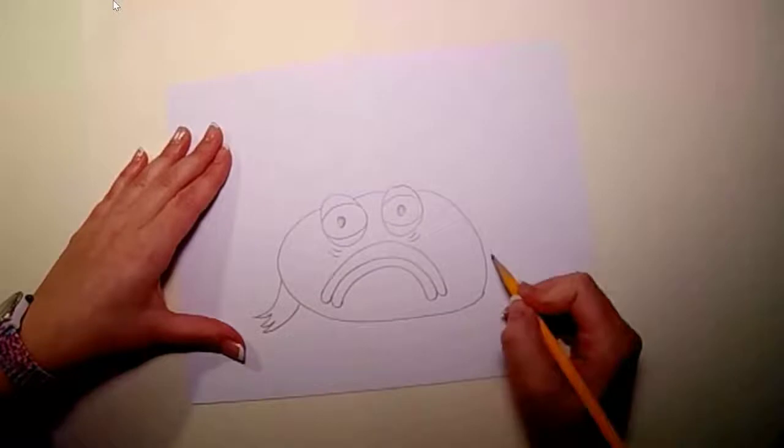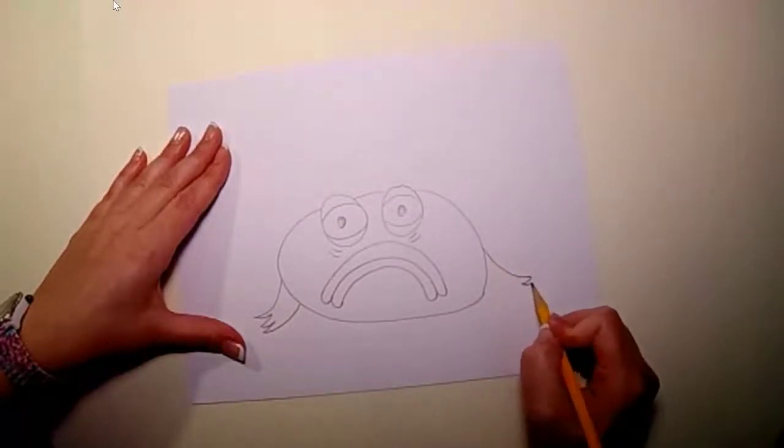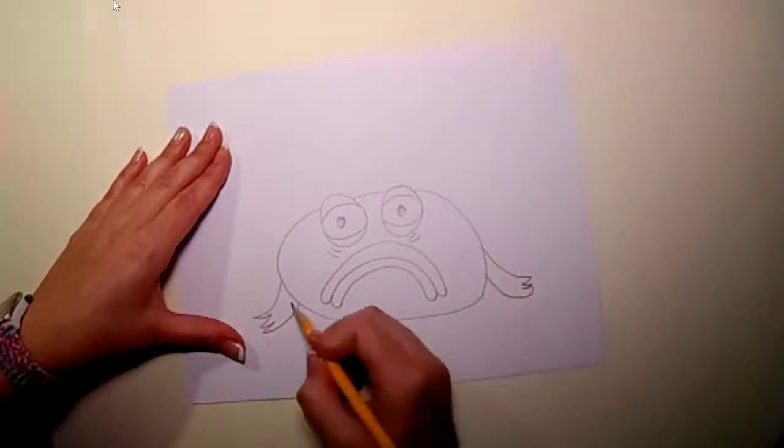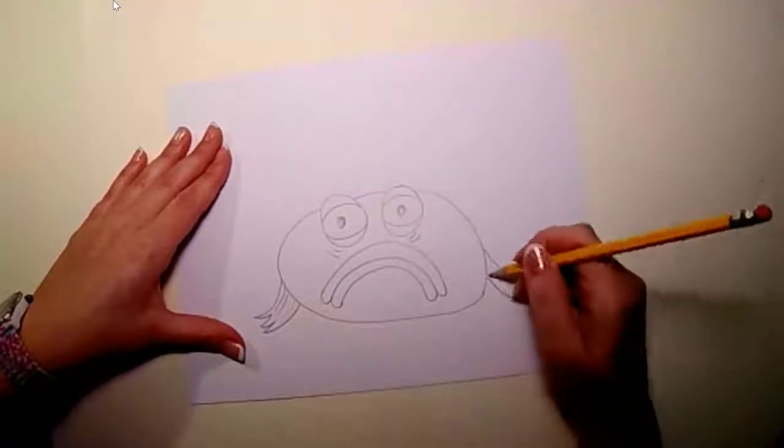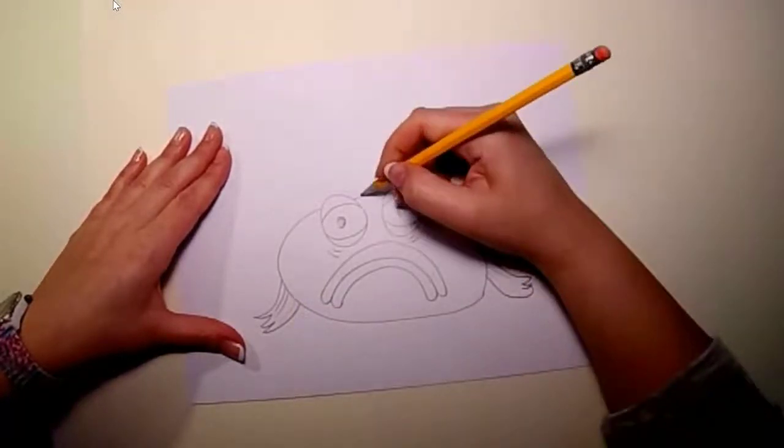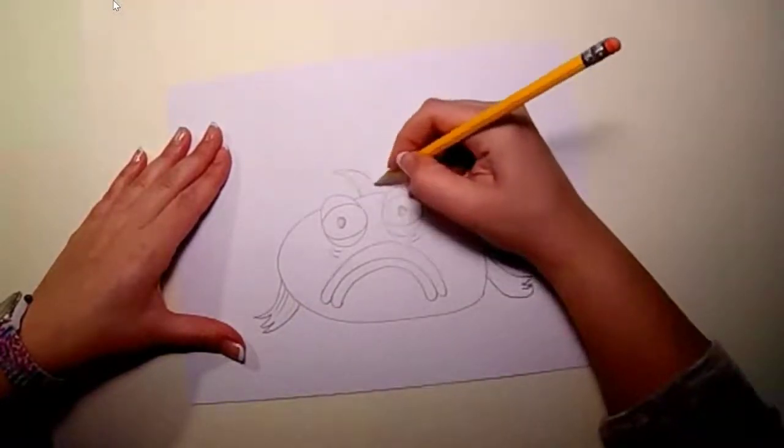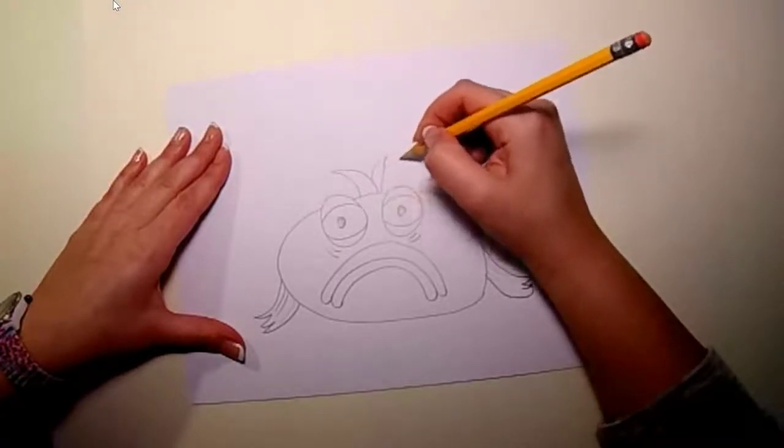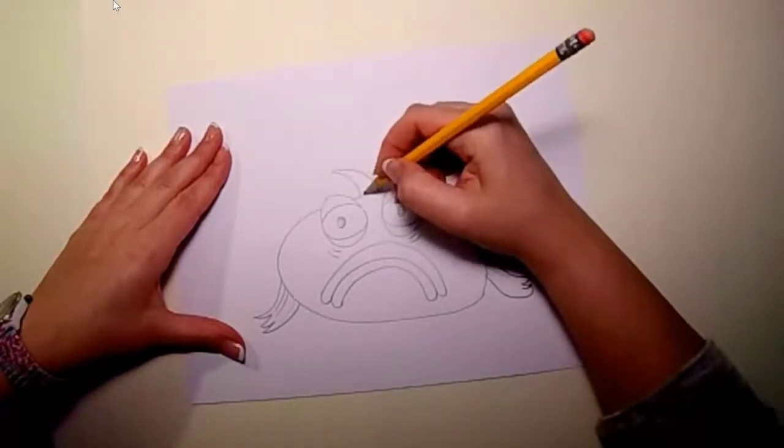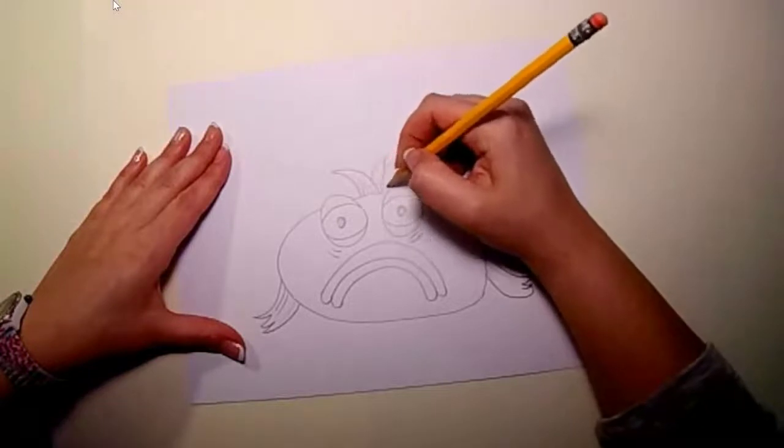Now for the fins. Pout Pout's fins are dragging on the bottom of the ocean. They are just so heavy and floppy. For his top fins they're very droopy, so you're going to kind of draw some droopy triangles. Almost looks like spiky hair.